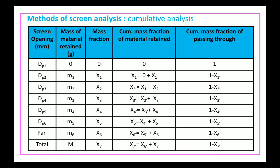The cumulative mass fraction for the fifth screen is represented by x4-dash, which equals x3-dash plus x4. x3-dash is the sum of mass fractions retained up to the third screen plus the mass fraction on the fifth screen x4. The cumulative mass fraction of material retained on the pan equals the sum of mass fractions on every screen — first, second, third, fourth, fifth, sixth — plus the material retained on the pan. Since the sum of all mass fractions is always 1, x7-dash must always equal 1.